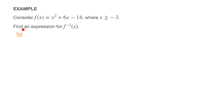We're then told to find an expression for the inverse of f, or inverse f of x. The first thing to draw your attention towards is the fact that we're told x must be greater than or equal to negative 3. This is important because, as such, we're given the domain of the function — in other words, the domain of f, or f of x. I've now made a note of that, and it will be important later.